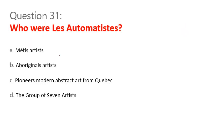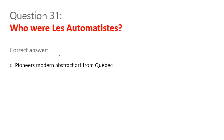Question 31. Who were Les Automatistes? A. Métis artists. B. Aboriginal artists. C. Pioneers of modern abstract art from Quebec. D. The Group of Seven artists. Correct answer: C. Pioneers of modern abstract art from Quebec.